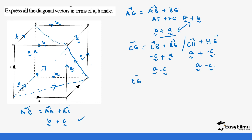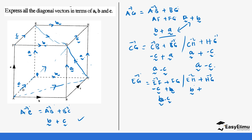Now for diagonal EG. We can move from E to F plus F to G, or from E to H plus H to G. Using EF plus FG: EF is opposite of FE, so it's minus A — wait, that should be B — plus FG which is A, giving B minus C. Using EH plus HG: EH is vector B, and HG is opposite of GH, so minus C — giving B minus C. Both paths give the same answer: EG equals B minus C.